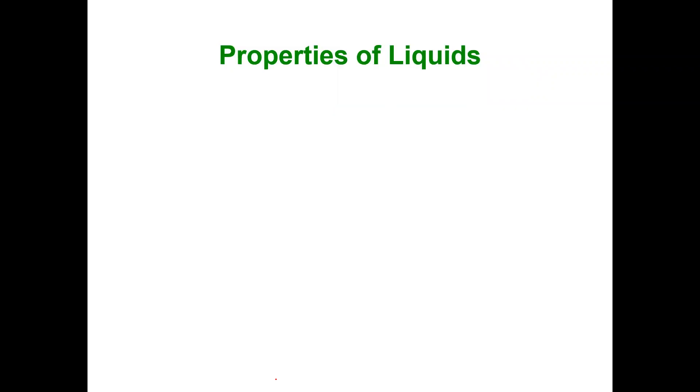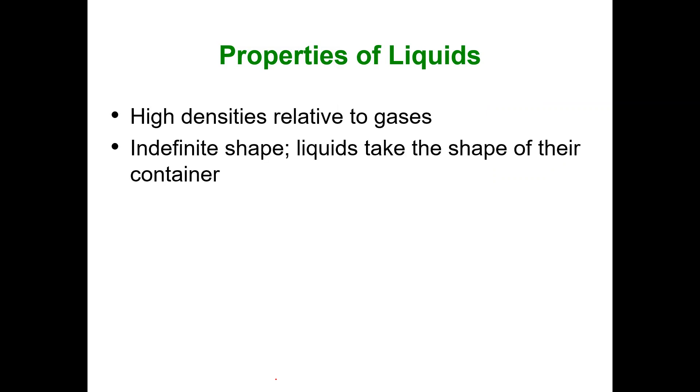So what about the properties of liquids? Well, again, they have high densities relative to gases. They have an indefinite shape. So what does that mean? They take on the shape of their container. And why is that? Because of the degrees of motion, the freedom of motion. Because they can move and slip and slide over each other,